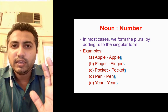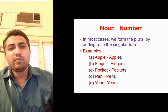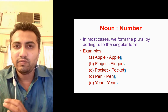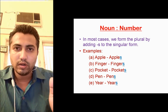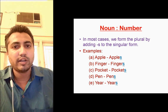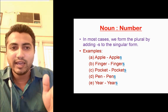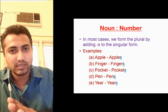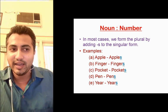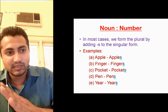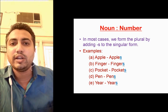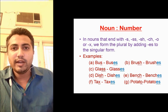The first rule is: generally, nouns are added with an 's' to convert them into plural. Most nouns are such that we simply add 's' to make them plural. For example, apple becomes apples, finger becomes fingers, pocket becomes pockets, pen becomes pens, ear becomes ears. By adding just an 's', the noun is converted to plural. Now let us go to the second rule.